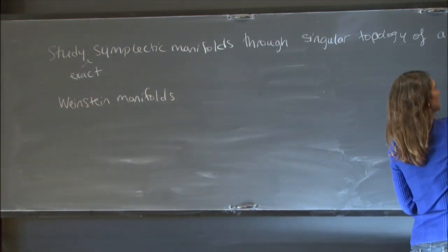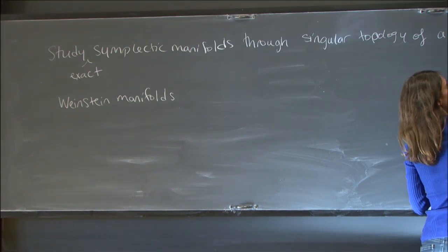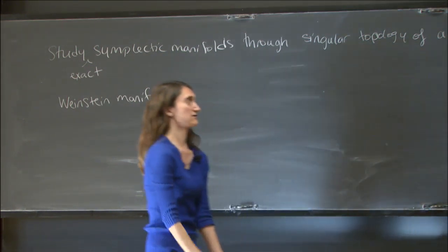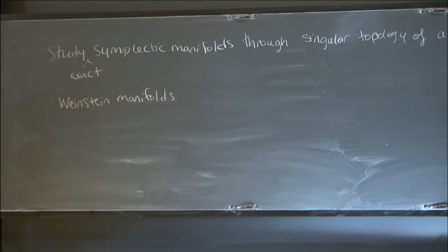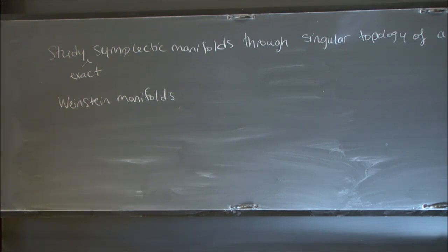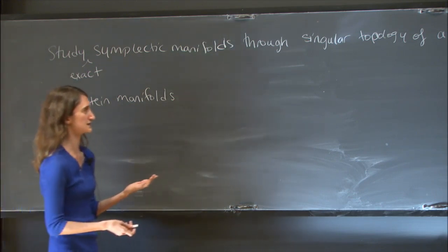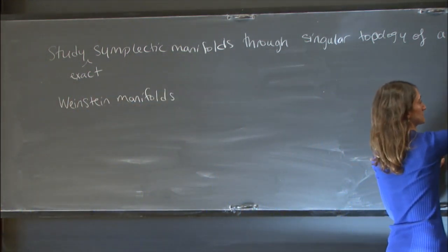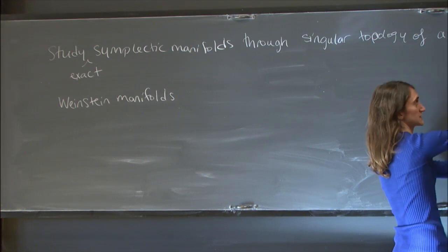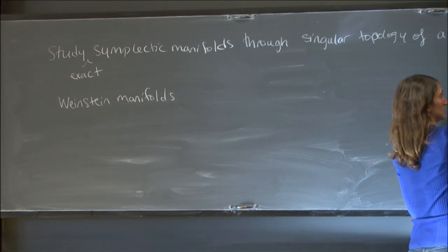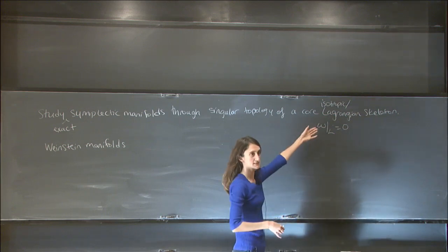The skeleton is isotropically stratified. I will eventually get to a point where I want to thicken everything to have top Lagrangian cells, so it will be built as a union of smooth Lagrangian pieces. The isotropic condition is that the symplectic form restricted to that submanifold vanishes, so there's no symplectic geometry there.